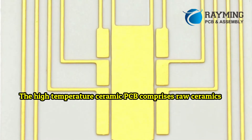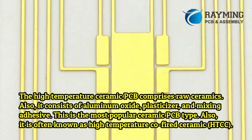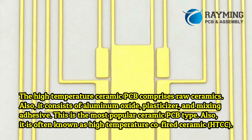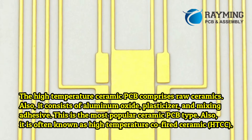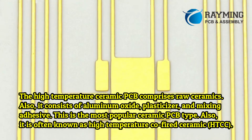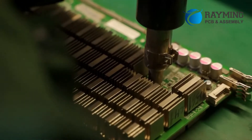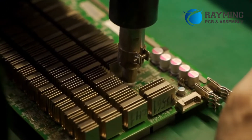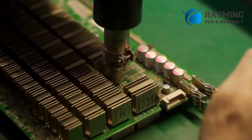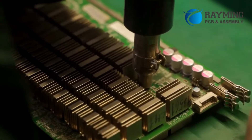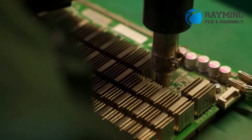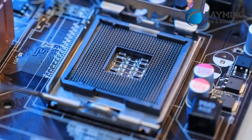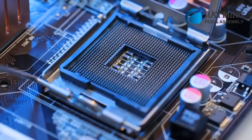High temperature ceramic PCB comprises raw ceramics, aluminum oxide, plasticizer, and mixing adhesive. This is the most popular ceramic PCB type, also known as high temperature co-fired ceramic (HTCC). The PCB manufacturer fabricates it using raw ceramic material, coats the material, then performs circuit tracing on molybdenum metals. If the tracing is successfully achieved, the boards are baked between 1,600 and 1,700 degrees Celsius for about 48 hours.